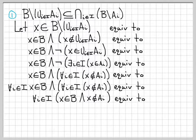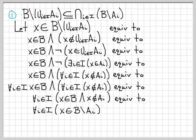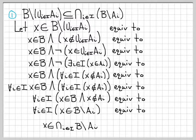We're almost there. Looking at the inside part — X is in B and X is not in A_i — that is just the definition of a difference. If X is in B and X is not in A_i, that means X is in B diff A_i. So we've reduced our original expression, X in B diff union of A_i, to the logically equivalent: for all i in capital I, X is in B diff A_i. This is equivalent to X being in the intersection — if X is in every B diff A_i, it's in the intersection of all of them. So X is in the intersection over all i in capital I of B diff A_i. This is what we wanted to show — we started with an arbitrary element of B diff the union and ended up showing X is in the intersection of B diff A_i. Step one is accomplished.